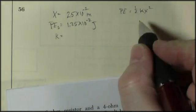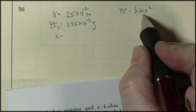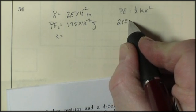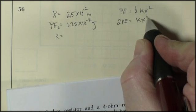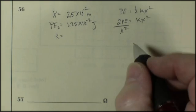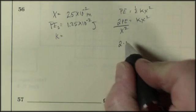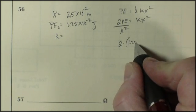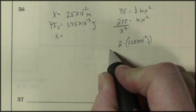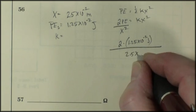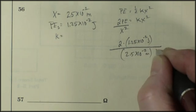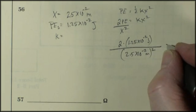And at this point I always do my algebra. I want to get k by itself, so I get rid of the 1/2 by multiplying by 2. 2 potential energy is equal to kx squared. I want to get k by itself, so I divide both sides by x squared. Then I can plug in 2 times 1.25 times 10 to the negative 2 joules, divided by 2.5 times 10 to the negative 2 meters, and don't forget to square that. That's equal to k.